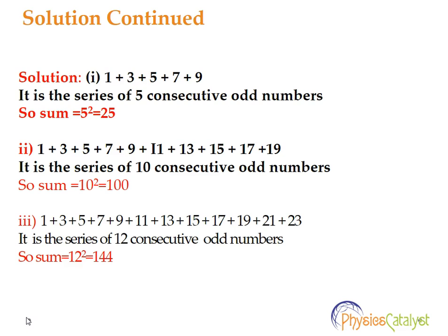The next part is 1 plus 3 plus 5 plus 7 plus 9 plus 11 plus 13 plus 15 plus 17 plus 19. It is a series of 10 consecutive odd numbers, so the sum is 10 square, which equals 100. For these types of questions, we need to observe the series, find the formula, and then solve.